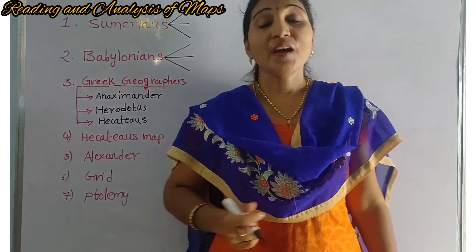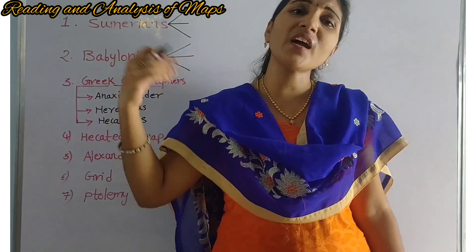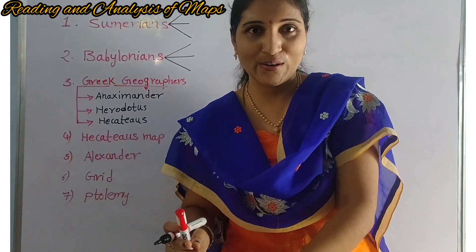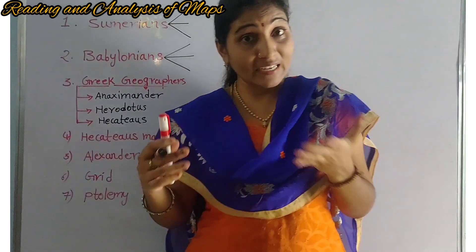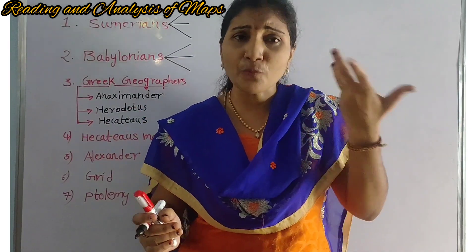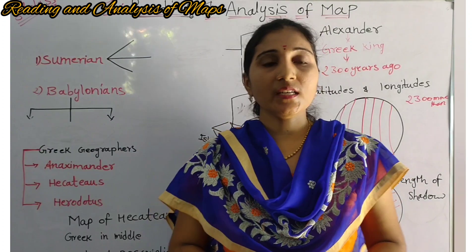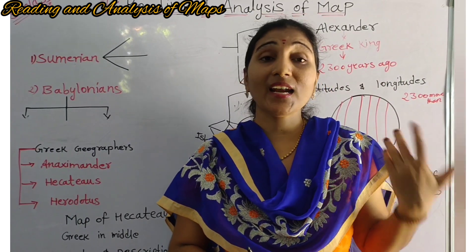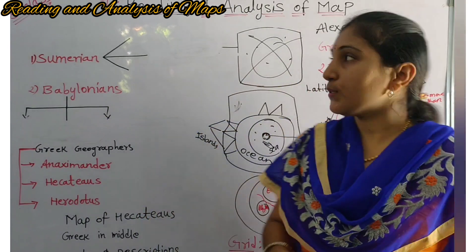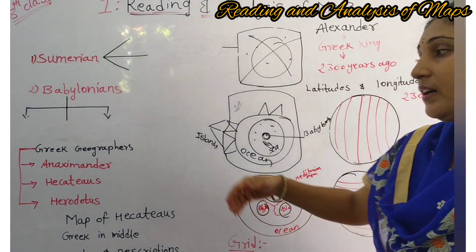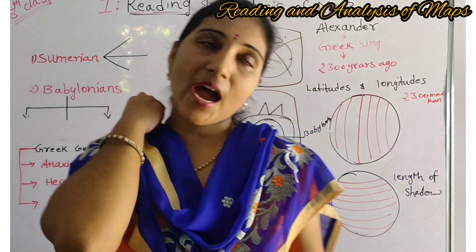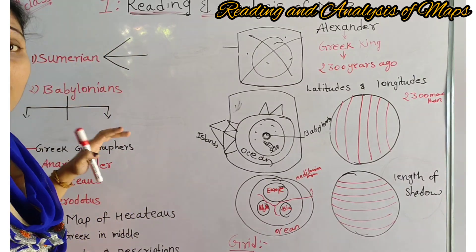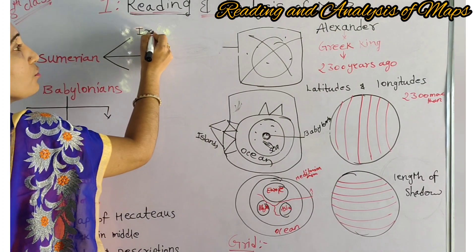Now coming to the next topic — maps from the ages down, meaning maps from so many years back, which were made before we were born. So who were the first people who started making the map, and why did they get the idea to make the map? Students, now we are going to discuss about the earliest surviving maps — those of the Sumerians and Babylonians — and the great geographers, what kind of maps they had prepared and so on. First we are going to discuss about the Sumerians.